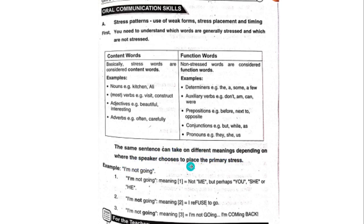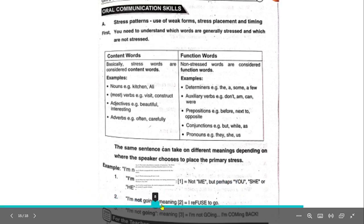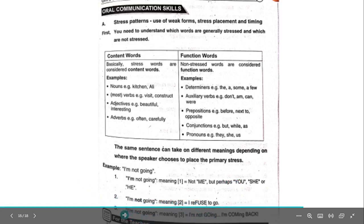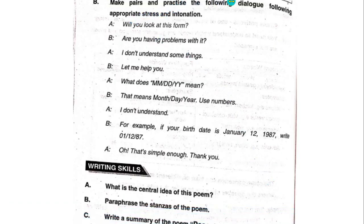The same sentence can take on different meanings depending on where the speaker places the primary stress. Example: 'I am not going.' First meaning — stress on 'I': not me, perhaps you, she, or he. Second meaning — stress on 'not': I refuse to go. Third meaning — stress on 'going': I'm not going, I'm coming back.